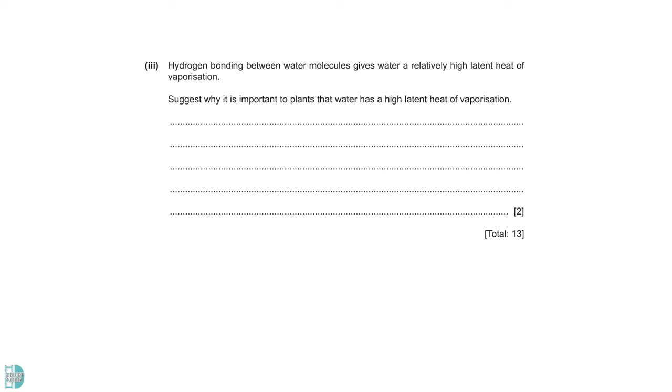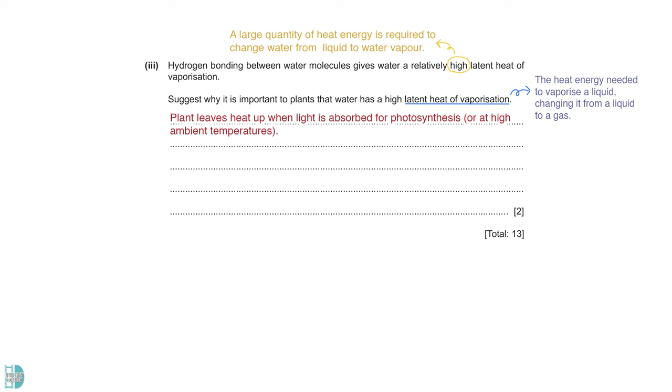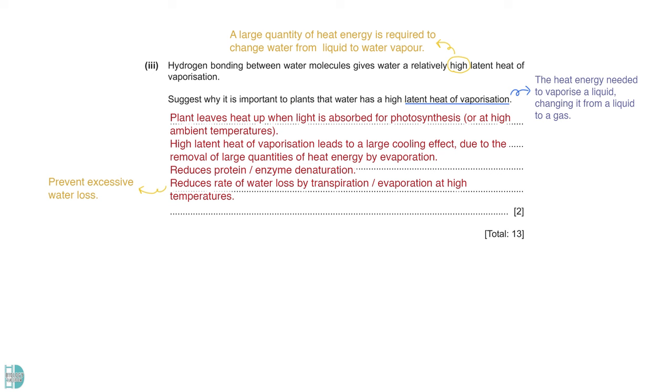Suggest why it is important to plants that water has a high latent heat of vaporization. The latent heat of vaporization is the heat energy needed to vaporize a liquid, changing it from liquid to gas. A large quantity of heat energy is required to change water from its liquid state to water vapor. When the ambient temperature is high, plant leaves heat up. It can also happen when light is absorbed for photosynthesis. High latent heat of vaporization leads to a large cooling effect as a large quantity of heat energy is removed by the evaporation of water. When the temperature does not increase easily, protein or enzyme denaturation can be reduced. This also reduces the rate of water loss by transpiration or evaporation at high temperatures.